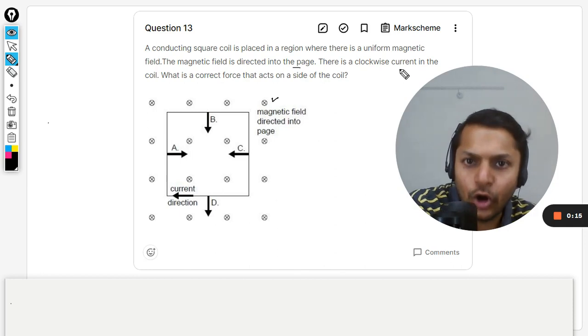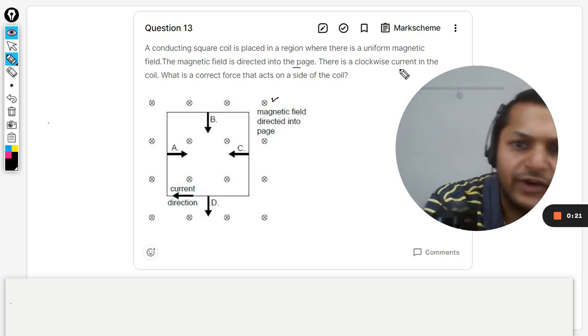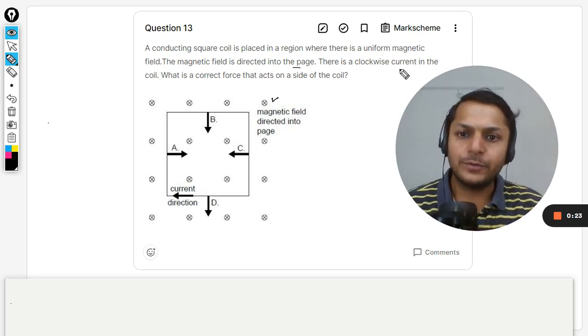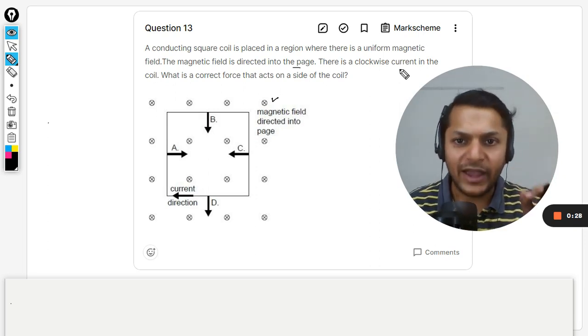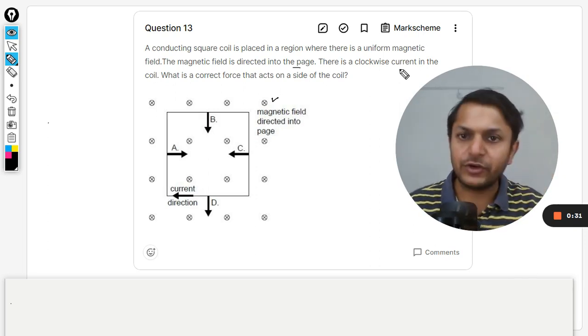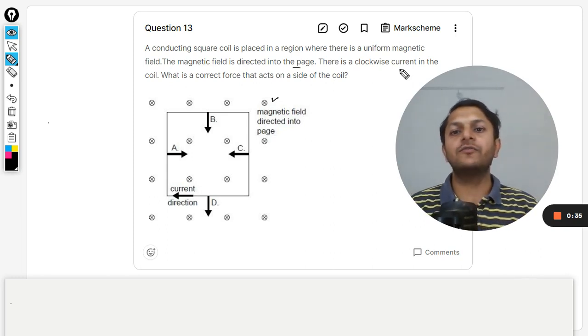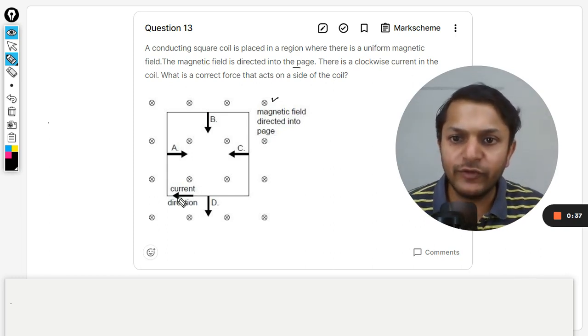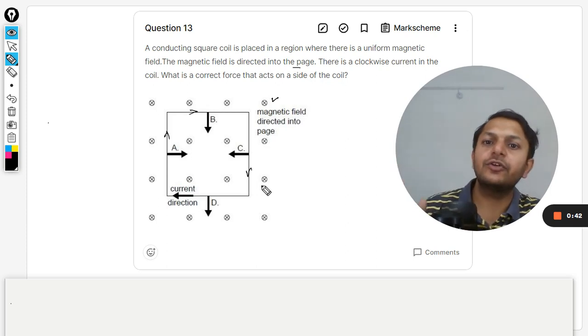What is a correct force that acts on a side of the coil? All of the options A, B, C, D are showing the direction of the force on that wire. The current is moving in the clockwise direction, so we want to find the direction of the force.